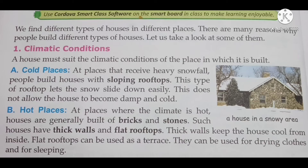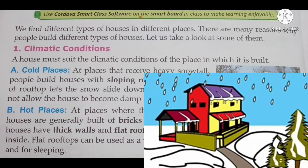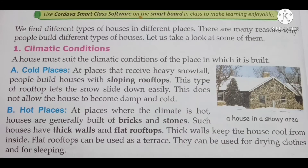Number one: cold places. At places that receive heavy snowfall, people build houses with sloping rooftops. ऐसी places जहाँ बहुत ज़्यादा बर्फ गिरती है, वहाँ लोग sloping roof वाले घर बनाते हैं। Look at this picture — this is a sloping roof. This type of rooftop lets the snow slide down easily. Sloping roof से बर्फ आसानी से नीचे गिर जाती है और छत पर इकट्ठी नहीं होती। This does not allow the house to become damp and cold. इस तरह की छत से घर ज़्यादा गीले और ज़्यादा ठंडे नहीं रहते।